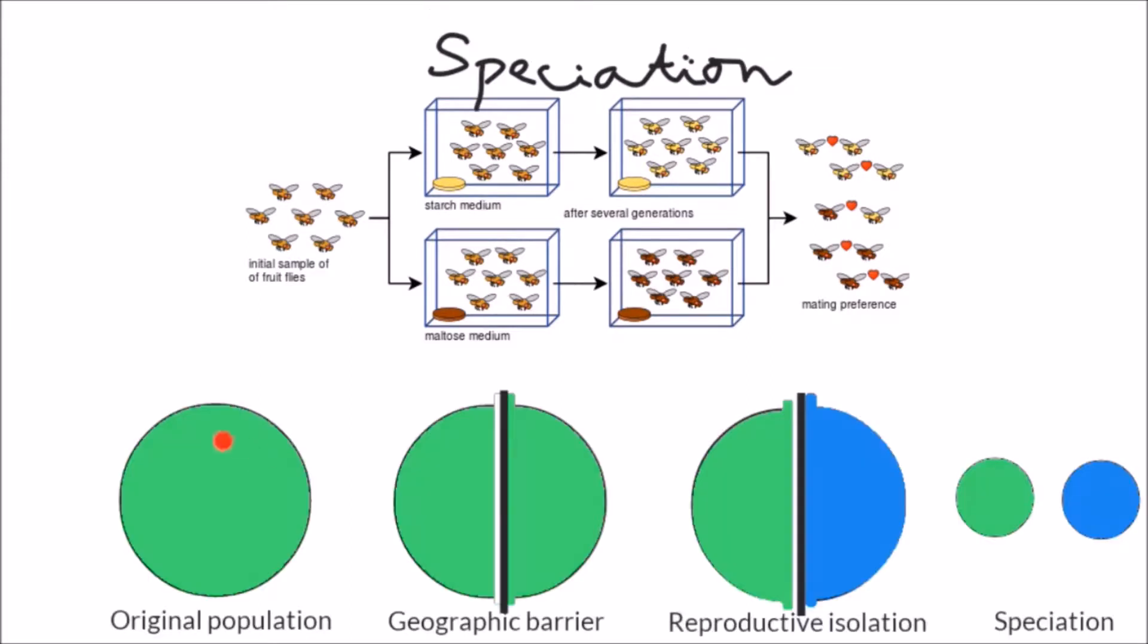When the original population is separated and the difference becomes so large that they cannot interbreed, it gives rise to new different species.